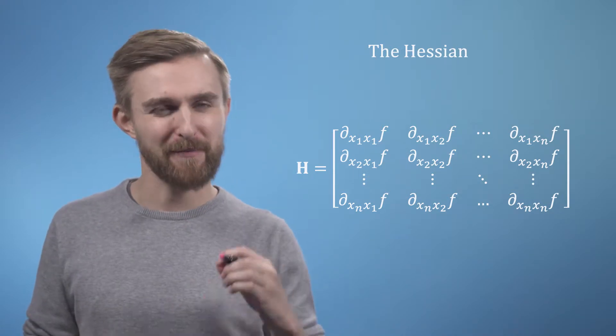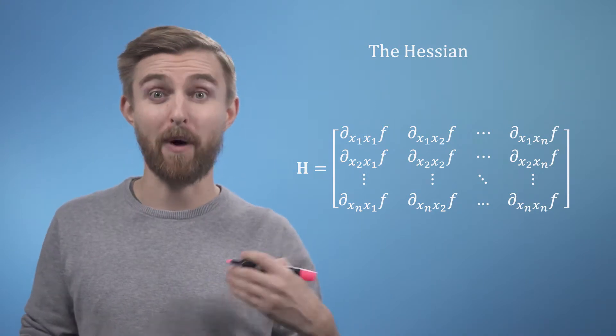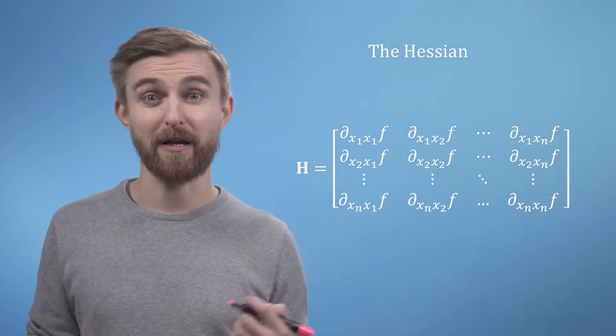As you can see, from this general form, our Hessian matrix will be an n by n square matrix, where n is the number of variables in our function f. Let's now take a look at a quick example. It often makes life easier to find the Jacobian first and then differentiate its terms again to find the Hessian.